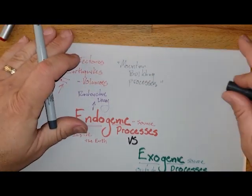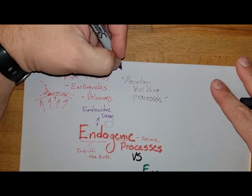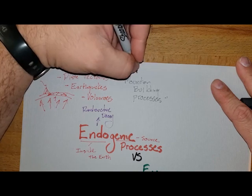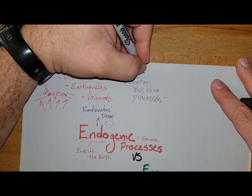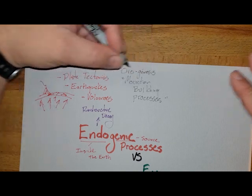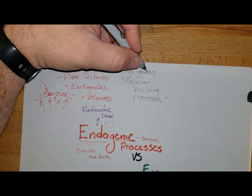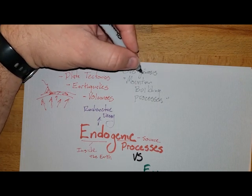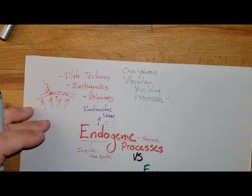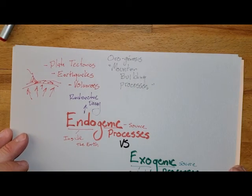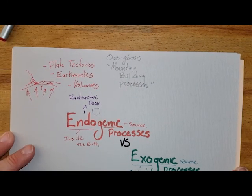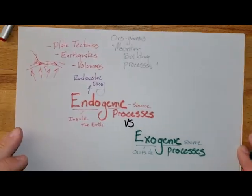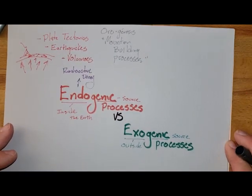We refer to a lot of these processes as mountain-building processes, and they have a name: orogenesis. 'Oro' means mountain and 'genesis' means creation or beginning, so orogenesis means the creation of mountains. These mountain-building processes cause the landscape to go higher, crushing mountains together and making things grow.